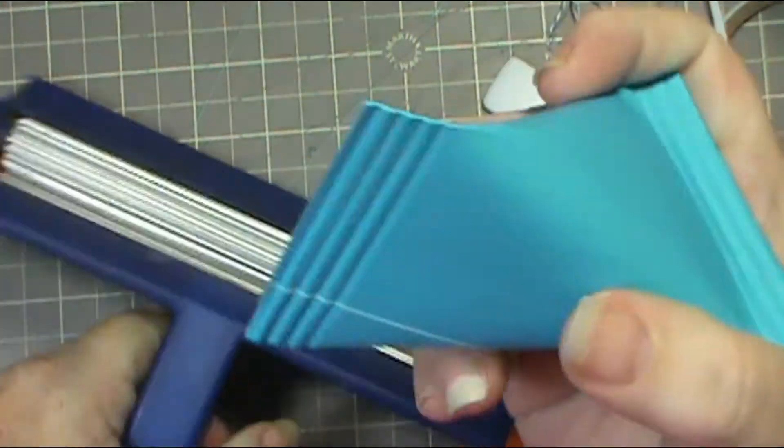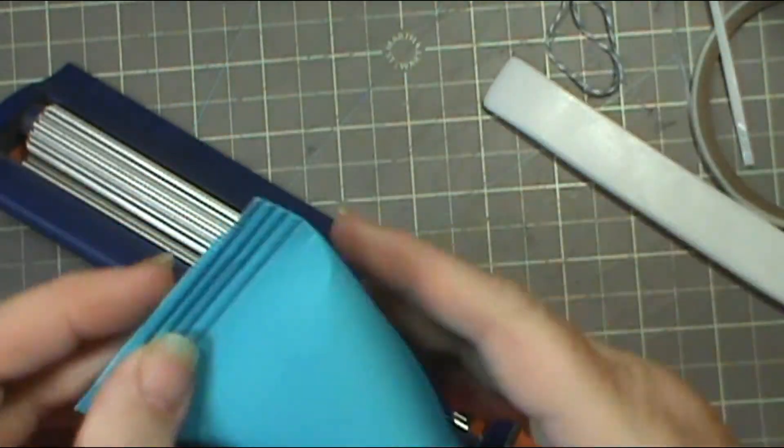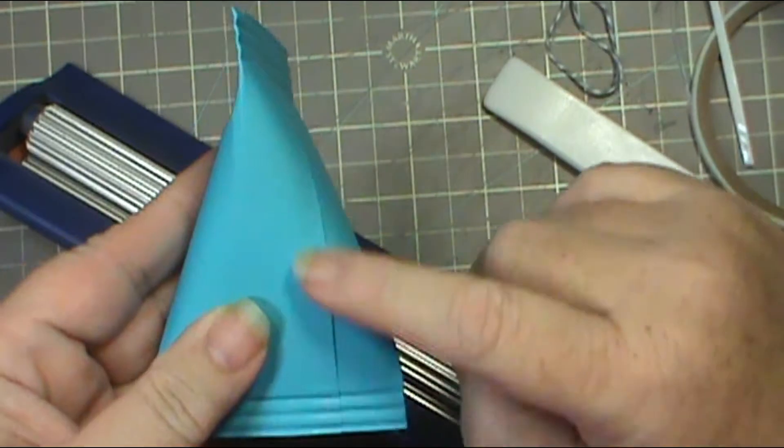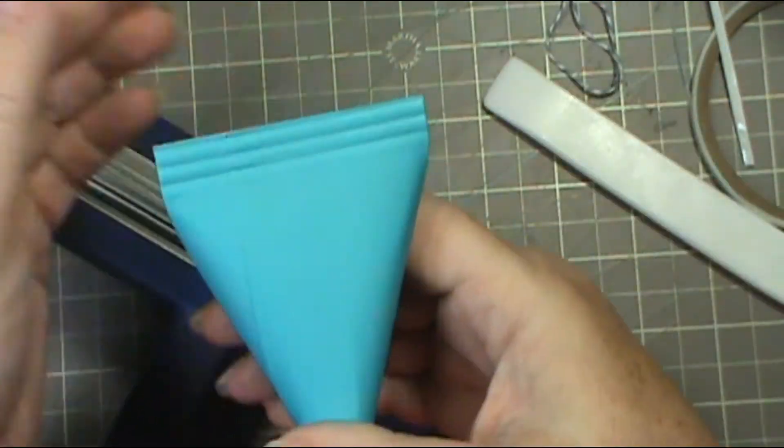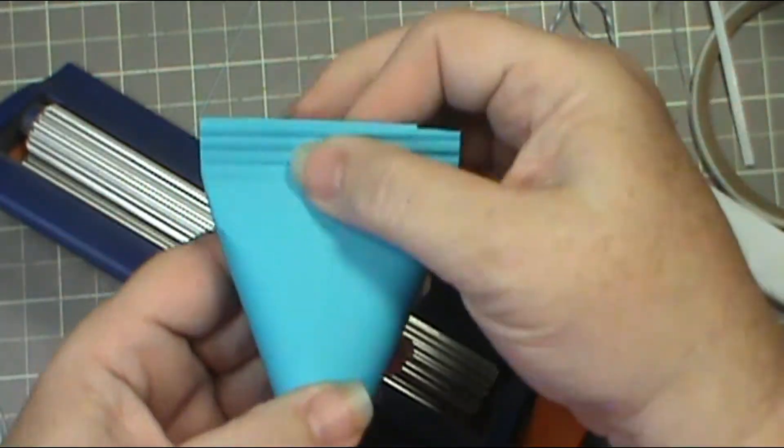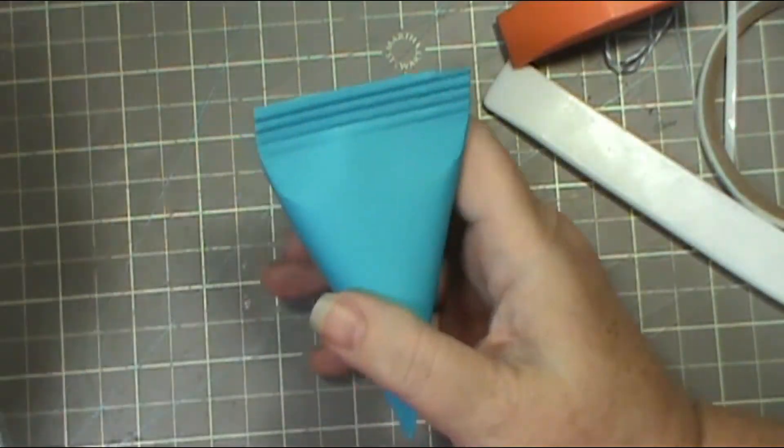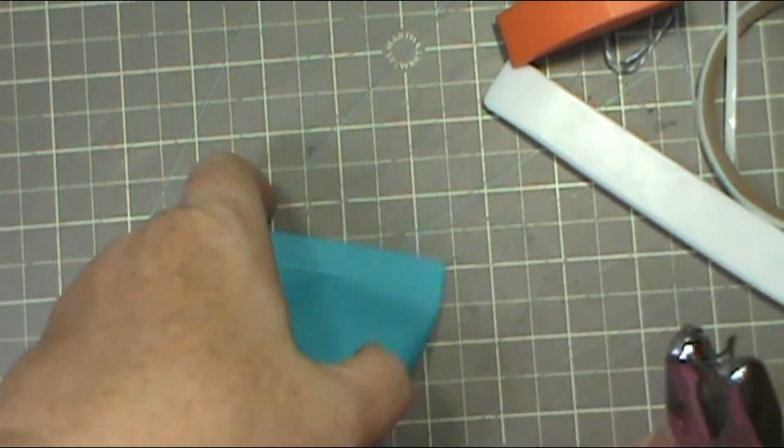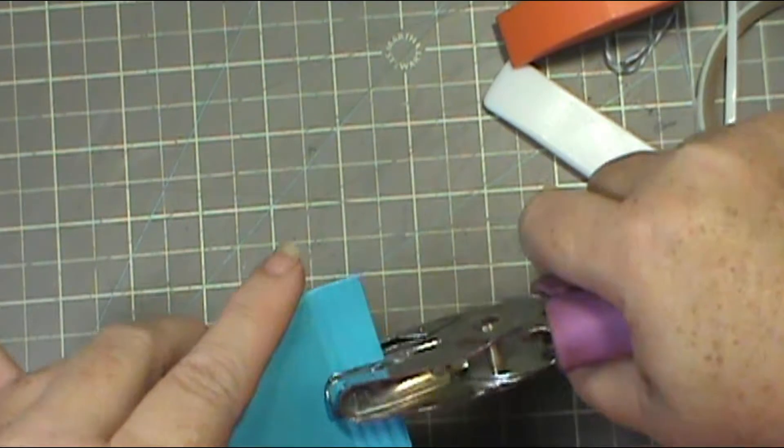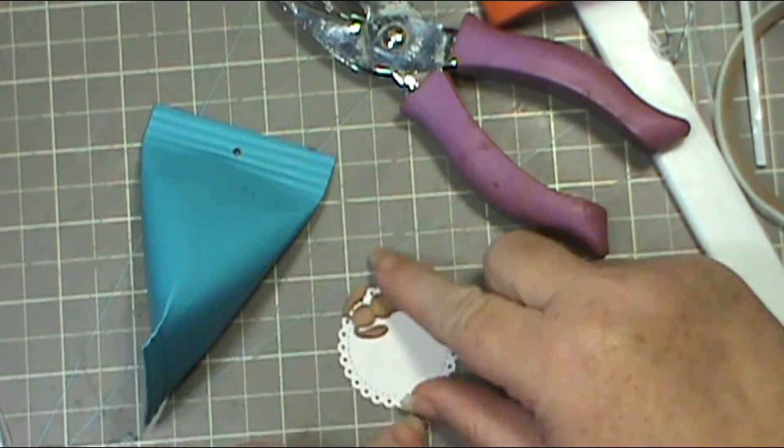I just pick which side I want to be my front, because of course here's your seam, so you wouldn't want that to be the front of your piece. Pick whichever works best for you. I think I like that one. Then I use a 1/8 inch hole punch and I just eyeball the center here and poke myself a hole. I've already taken my bunny.